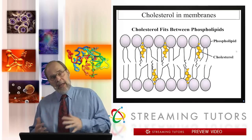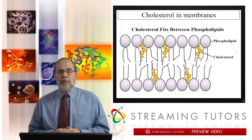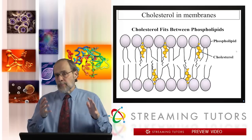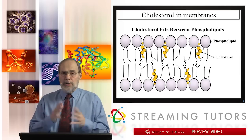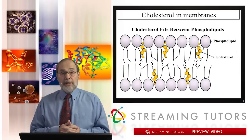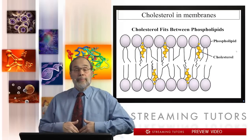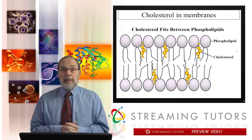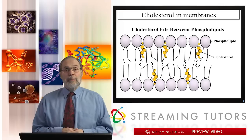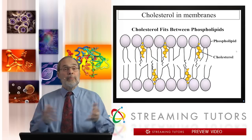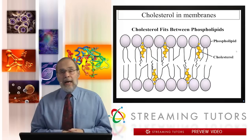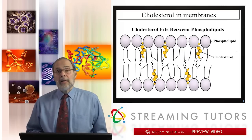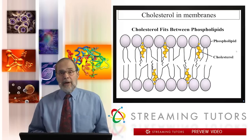Cholesterol and the fatty acid side chains on glycerophospholipids are somewhat different in their structure, and so the properties of the membrane are changed by having cholesterol present. As a result, membranes have different amounts of cholesterol, depending upon whether they're an inner mitochondrial membrane, for example, as opposed to a plasma membrane at the surface of the cell. Moreover, that cholesterol needs to be readily available in order to construct these different membranes.